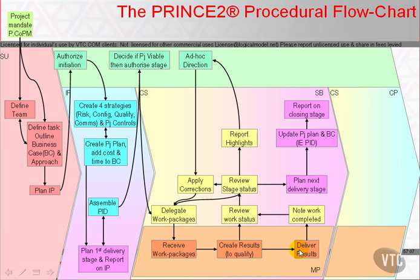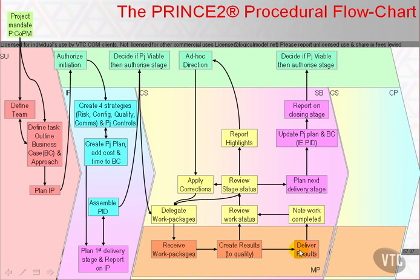All is summarised in an end-stage report, and the whole lot is passed to the project board to decide whether the project remains viable and desirable. If so, then the cycle of delegate, receive, create, deliver, note completion and review stage status restarts, with the project manager taking control of the stage on a day-to-day basis, handing out work packages and noting when they are complete in order to delegate further work packages. When the supply of work packages within the current stage plan is exhausted, starting the plan for the next delivery stage, updating the project plan, reporting on the closing stage, and asking the project board for permission to start again — and so we go around a tight cycle within the stage and a larger cycle for each stage.